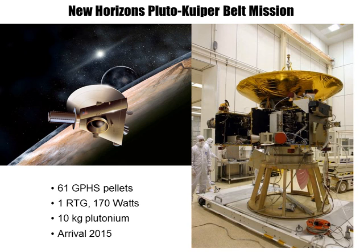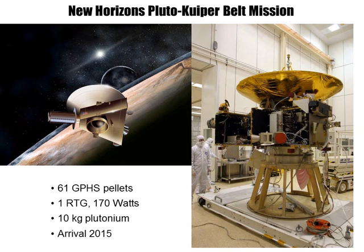Another example of a space mission utilizing plutonium-238 is the New Horizons mission that arrived at the Pluto-Kuiper Belt, which had around 10 kilograms of plutonium with one RTG and a number of heat sources. Plutonium-238 is a reliable material for generating heat and electricity for unmanned space missions. There are current efforts in the United States by NASA to renew the ability to produce plutonium-238 for further missions.